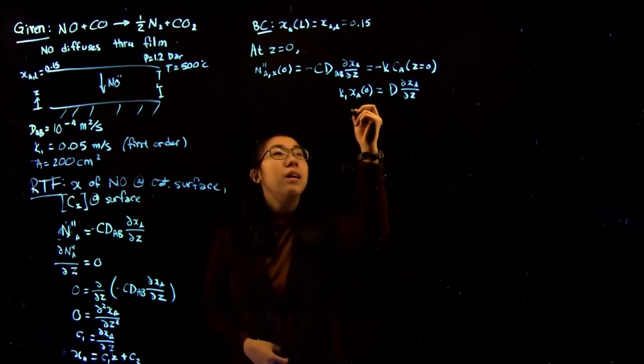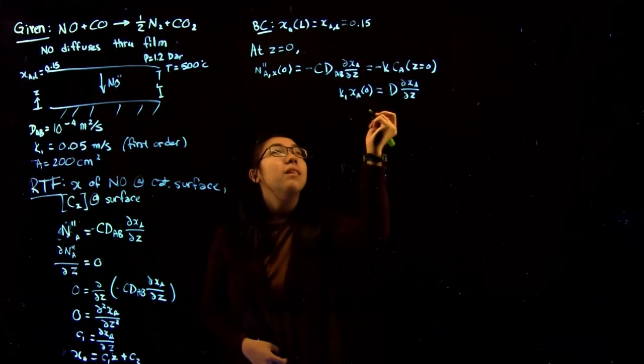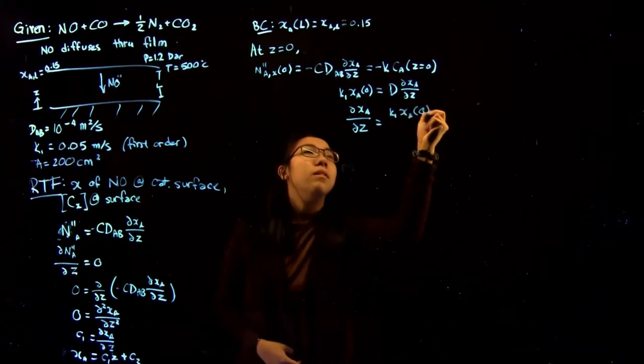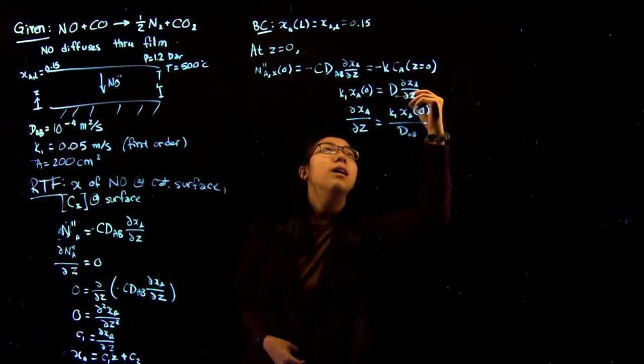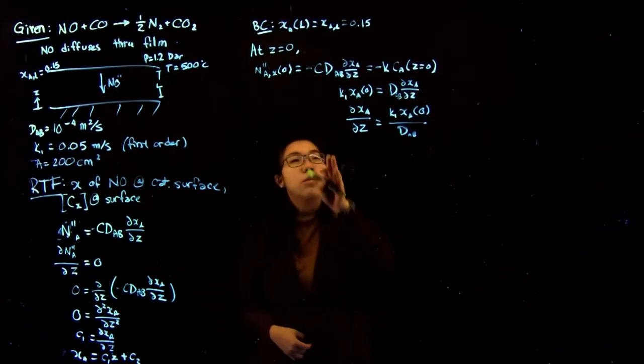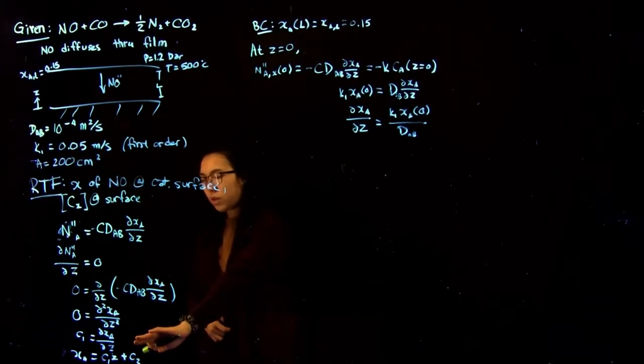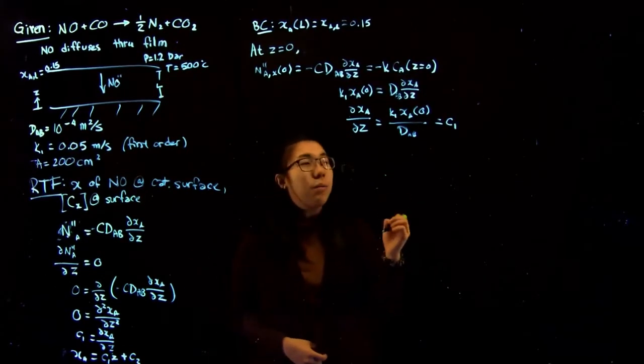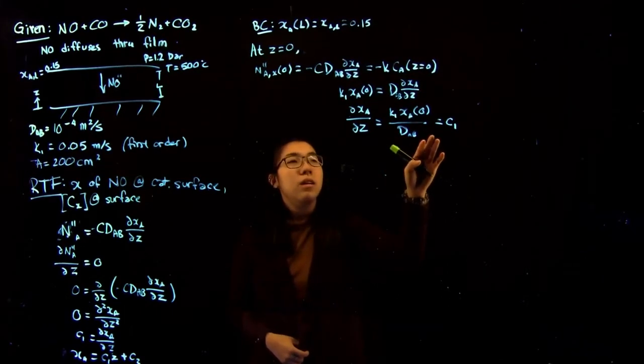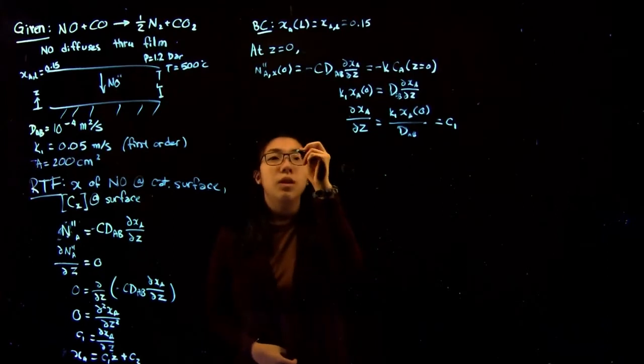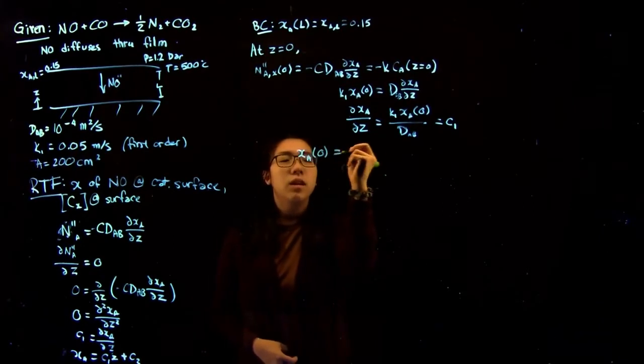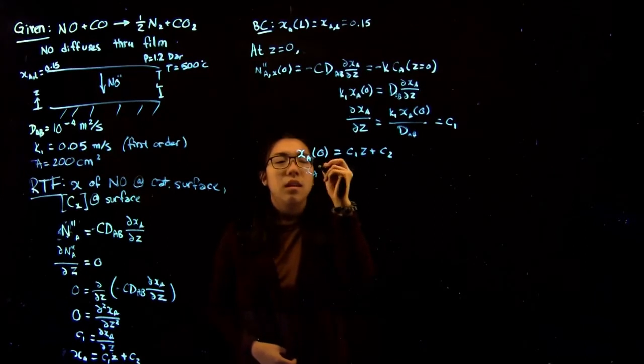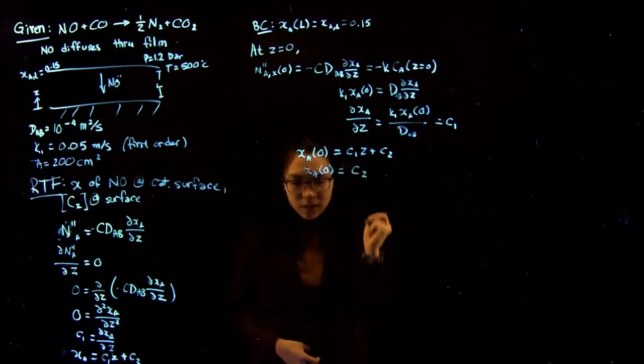So from here, we can get that dXA by dZ equals K1 times X at position zero divided by the diffusion coefficient. So we can substitute this into our derived profile over here, which says that this is equal to C1. What we can also do is plug everything into this equation for the total profile. So we know that XA of zero is equal to C1 times Z plus C2. And since Z is zero, that just says the mole fraction of A at zero is equal to the constant C2.